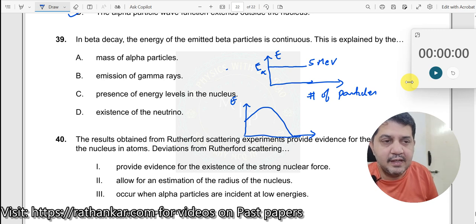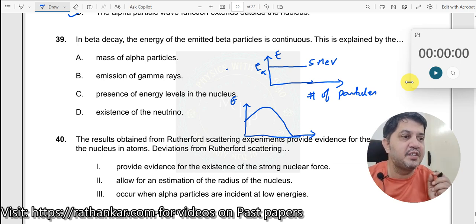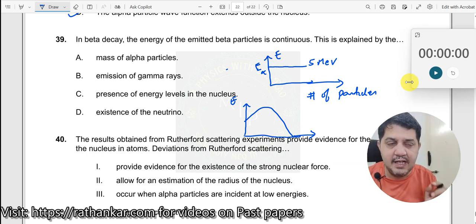He hypothesized that in addition to a beta particle, there is one more particle which comes out, which he called the neutrino.